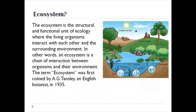The ecosystem is the structural and functional unit of ecology where living organisms interact with each other and the surrounding environment. In other words, an ecosystem is a chain of interaction between organisms and their environment. The term 'ecosystem' was first coined by A.G. Tansley, an English botanist, in 1935.